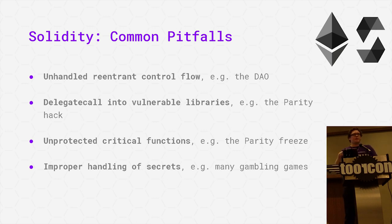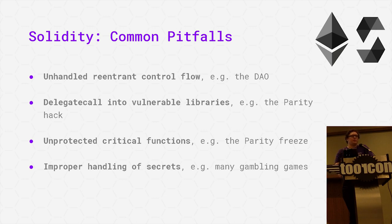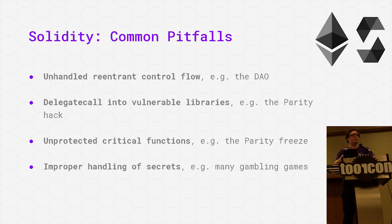There are some common flaws. I definitely recommend looking at my co-worker Paul Makowski's talk on these flaws in more depth. The ones most relevant to this talk: first, unhandled reentrant control flow, which was used to exploit the DAO contract and stole something like 3.6 million Ether. Basically, a contract calls out to another attacker-controlled contract but doesn't appropriately update its state before doing so. The attacker contract can then call back into the original contract and execute the same function, allowing repeated withdrawals even when the balance should be zero.